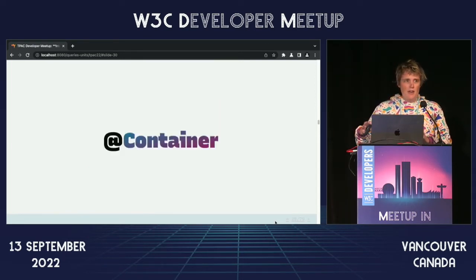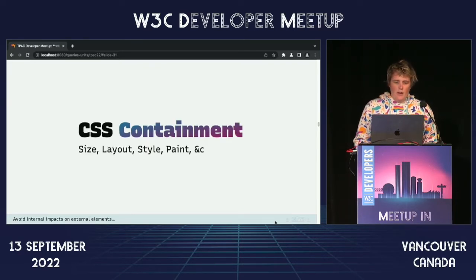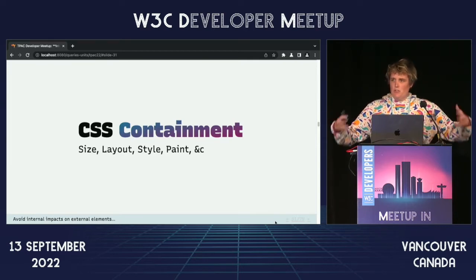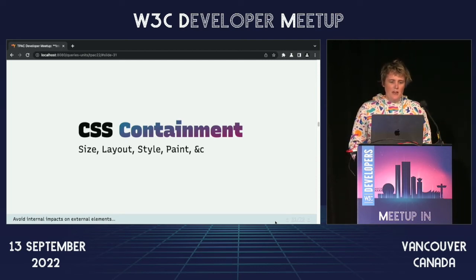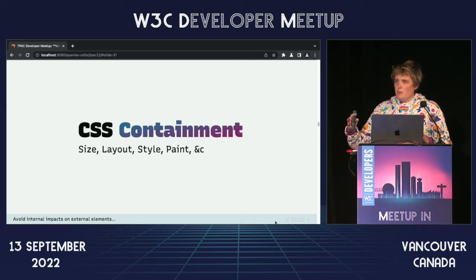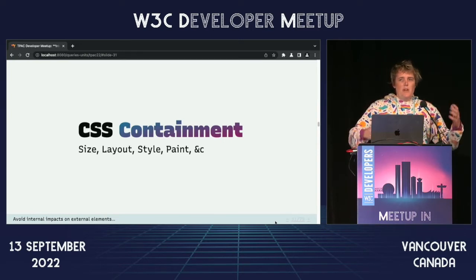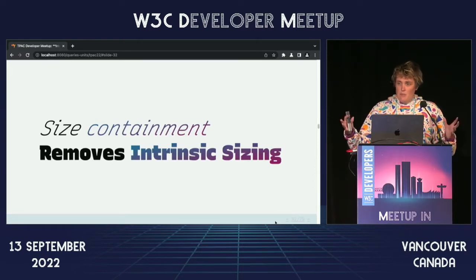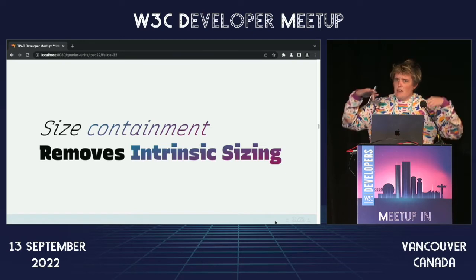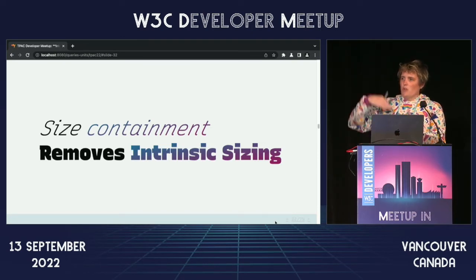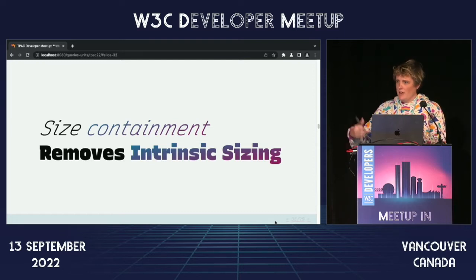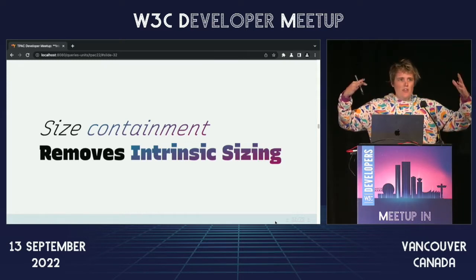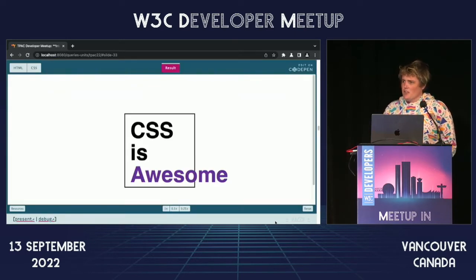We focused on at-container — we thought it gave us the most win right away. It's built on CSS containment, which is one of those foundations that's been laid over the last ten years, allowing us to isolate particular aspects of an element and its children so that we don't get layout loops. CSS containment — size containment specifically — removes intrinsic sizing from the container in order to break the loop of content sizing the container and container sizing the contents.